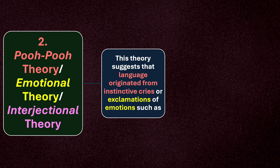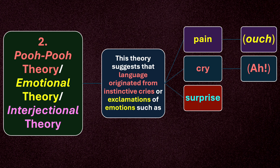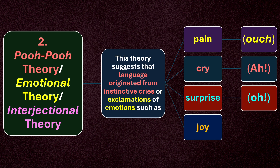Moving on to point number two: the poo-poo theory, also called emotional theory or interjectional theory. This theory suggests that language originated from instinctive cries or exclamations of emotions, such as pain — 'ouch'; crying — 'ah'; surprise — 'oh'; joy — 'aha'; and other exclamations like 'wow' which we instinctively produce. These must have been the beginning of linguistic expression.